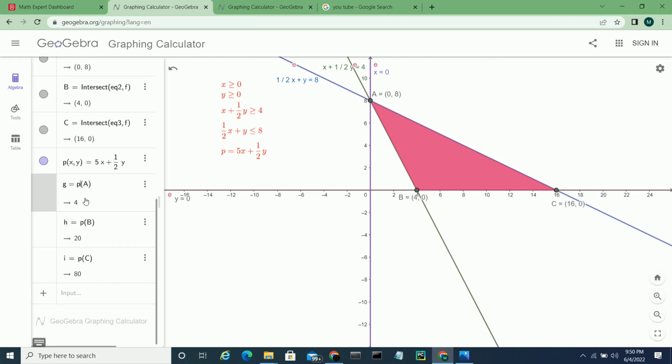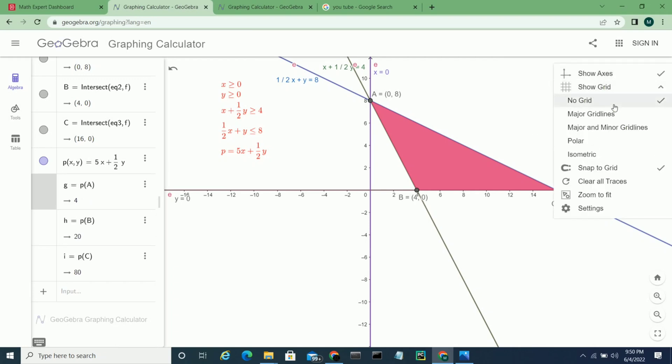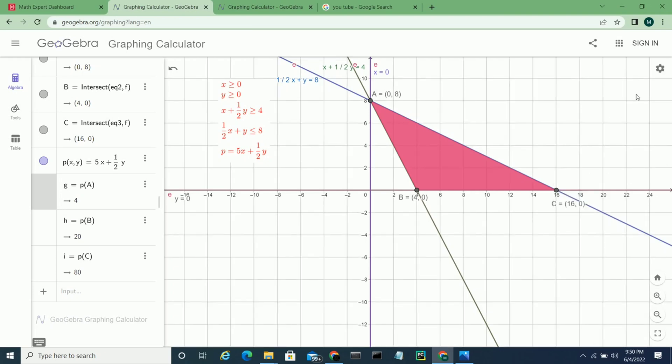Now we put C, we get 80. So maximum value is 80 and minimum is 4. So minimum value is at 0, 8 which is point A, and maximum at C which is 16, 0.